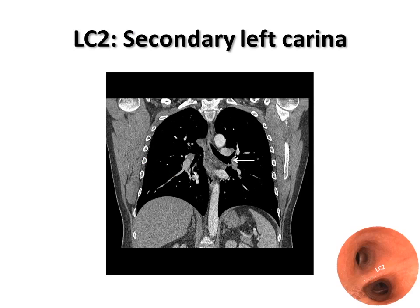The survey begins on the opposite side of the tumor, starting with the most distant lymph node station. Once in the airways, we encourage a slow in-and-out motion to position the scope at the desired location, then slow clockwise or counterclockwise rotation for changing the view.